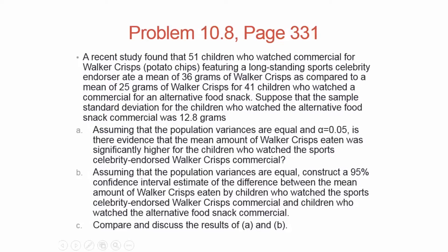We'll look at that on the next page. The problem says: assuming the population variances are equal and sigma is 0.05, is there evidence that the mean amount of Walker crisps eaten was significantly higher — that's the key phrase, higher — which tells me it's a one-tail test because I want to know if the group that watched the sports celebrity endorsed commercials did eat more potato chips. Then, assuming variances are equal, construct a 95% confidence interval estimate for the difference between the mean amounts, and compare the results.